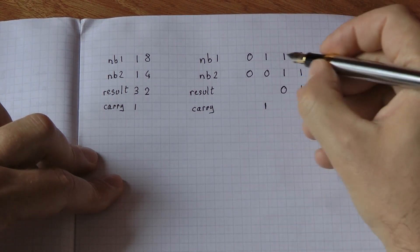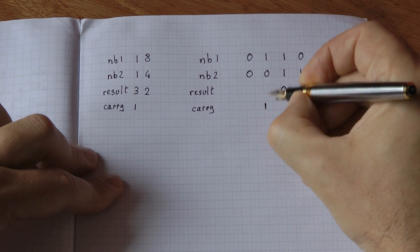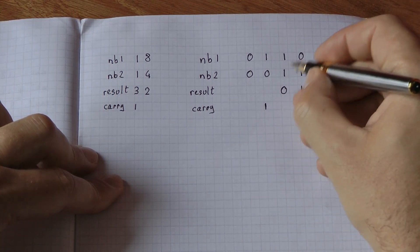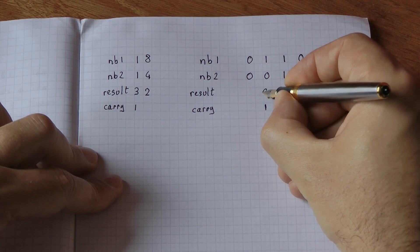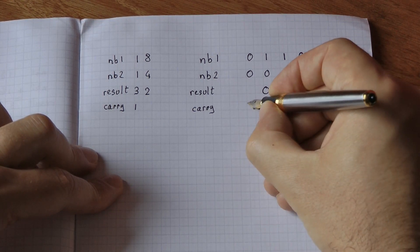1 plus 1 in binary gives me a 0 and I carry my 1 into the next column. This column, I've got 1 plus 0 plus 1. 1 plus 1, same as what we've done, I write down 0 and I carry my 1 here.